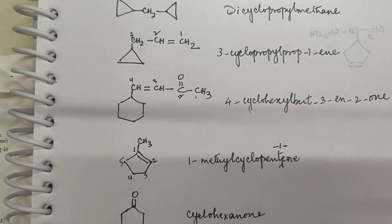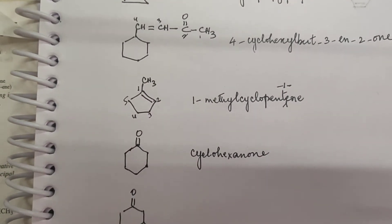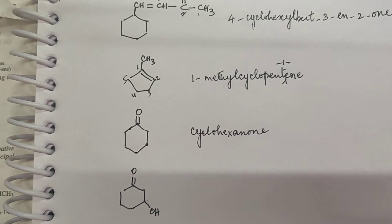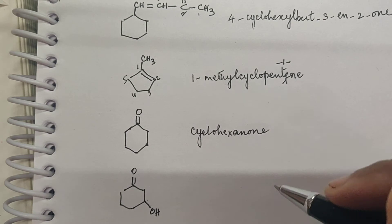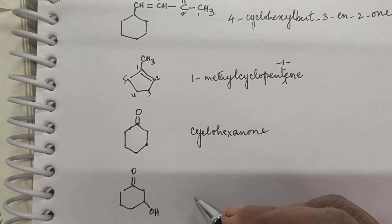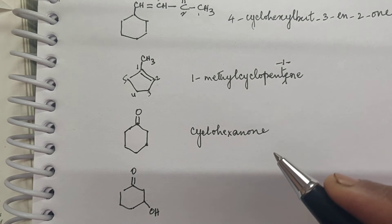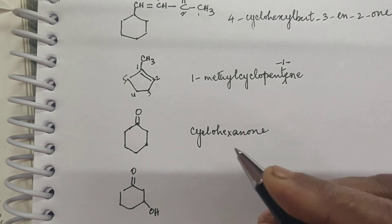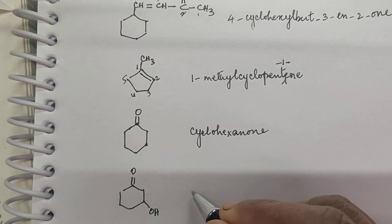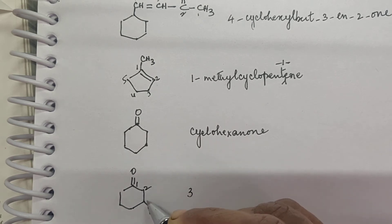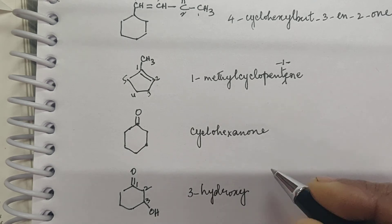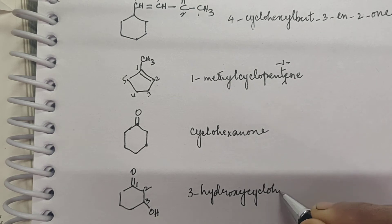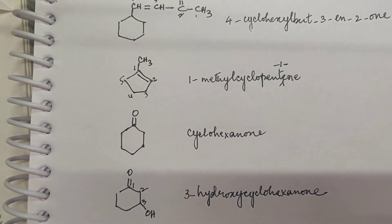This is called cyclohexanone. And how do you name this next one? The ketone is the principal functional group, so you name it as a derivative of cyclohexanone. Numbering: 1, 2, 3 — at the third position there is a hydroxyl group. So you call it 3-hydroxycyclohexanone.